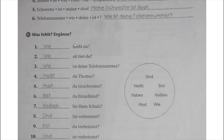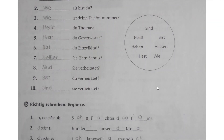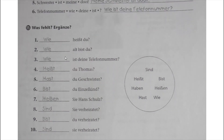Number fifteen: find the missing words from the word circle and complete the sentences. Wie heißt du? Wo wohnst du? Wie ist Dinas Telefonnummer? Hast du Thomas? Hast du Geschwister? Möchtest du Einzelkind sein? Heißen Sie Hans Schulz? Sind Sie verheiratet? Oder: Möchtest du verheiratet sein? Sind Sie verheiratet?